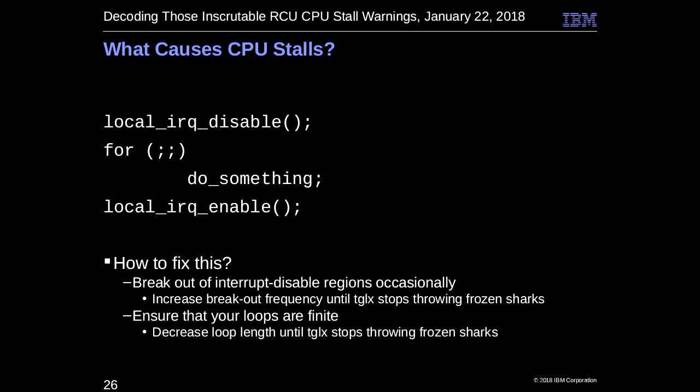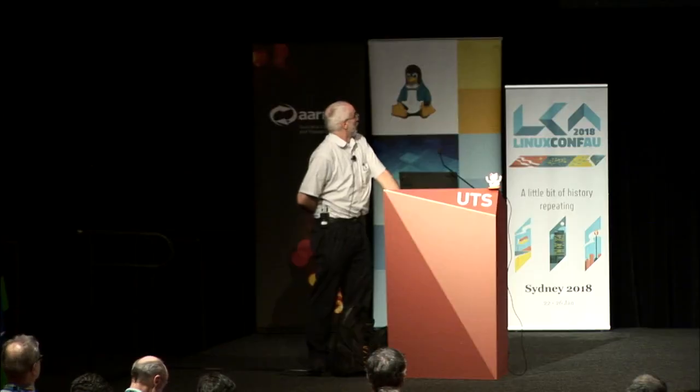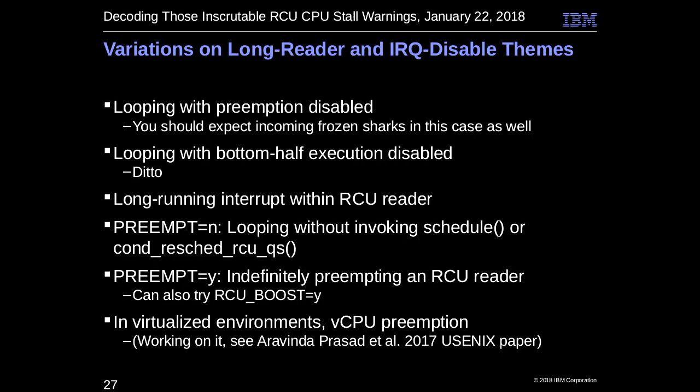If you do this sort of thing and it happens in the dash-RT kernel, you can expect some complaints — in particular from Thomas Gleixner. The stall warnings are maybe a little more polite than Thomas sometimes. It's also possible to loop with preemption disabled and in some cases that can cause a stall. Same deal for bottom half. If you have a long-running RCU reader, that's fine, but if you take an interrupt in the middle of it and the interrupt goes forever, that can cause the problem as well. Also looping without invoking schedule or doing cond_resched.